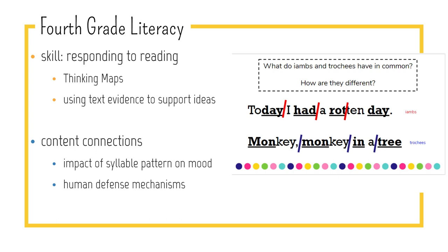So what are we doing in reading? We're going to be working on responding to reading using thinking maps and using text evidence to support our ideas. We're going to make content connections. The first quarter, the kids are studying poetry, and so we're going to look at the impact of syllable patterns on the mood of the poem. The second quarter, kids study animal defense mechanisms, and so we're going to study human defense mechanisms.